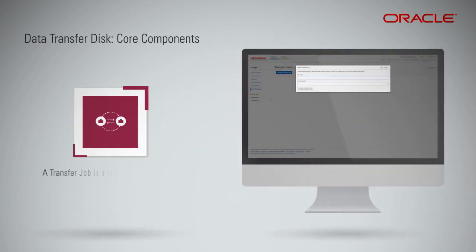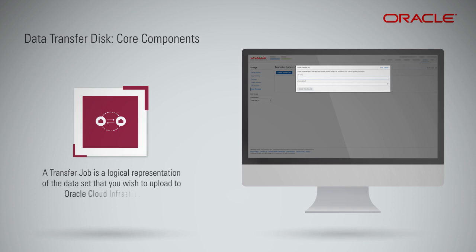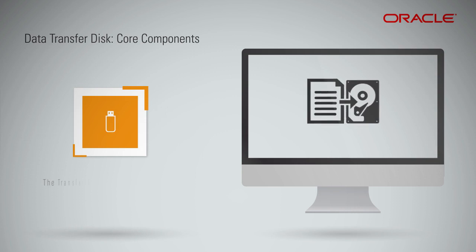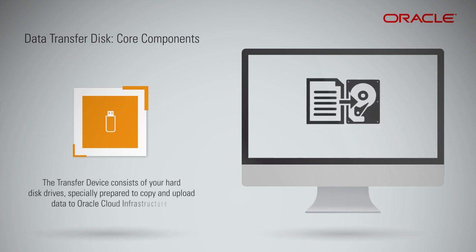A transfer job is a logical representation of the dataset that you wish to upload to Oracle Cloud Infrastructure. To use the Data Transfer Disk service, you first need to create a transfer job using the OCI console. When creating a transfer job, you must specify a job name and identify the object storage or archive storage bucket where you wish your data to be uploaded. The transfer device consists of your hard disk drives, specially prepared to copy and upload data to Oracle Cloud Infrastructure.